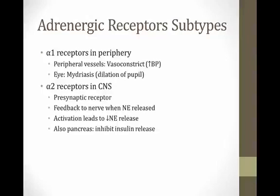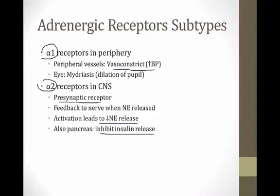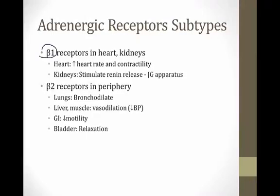There are several norepinephrine receptor subtypes. Alpha-1 receptors in peripheral vasculature cause vasoconstriction and raise blood pressure; in the eye they cause pupil dilation (mydriasis). Alpha-2 receptors are presynaptic in the CNS and provide negative feedback to reduce NE release; they also inhibit insulin release in the pancreas. Beta-1 receptors in the heart increase heart rate and contractility; in the kidneys they stimulate renin release. Beta-2 receptors bronchodilate the lungs, vasodilate liver and muscle, shut down gut motility, and promote bladder relaxation.